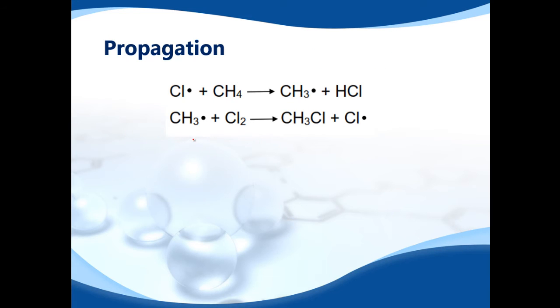Propagation. What happens in the propagation part of the reaction is this. You have your chlorine radical that reacts with CH4, which we know is an alkane, methane. Now what you produce is something called a methane radical.